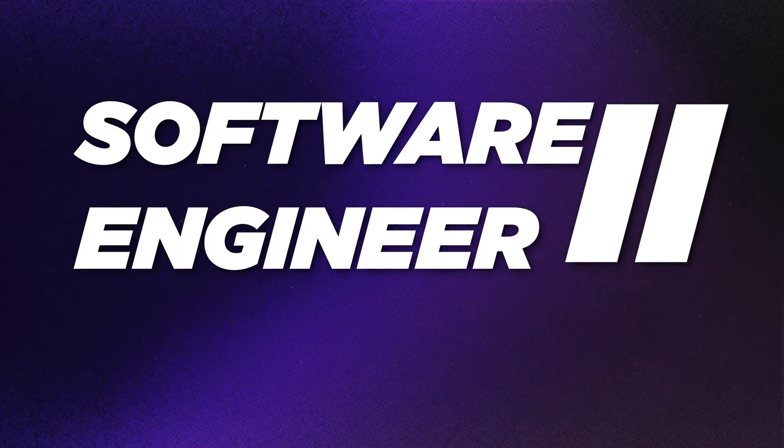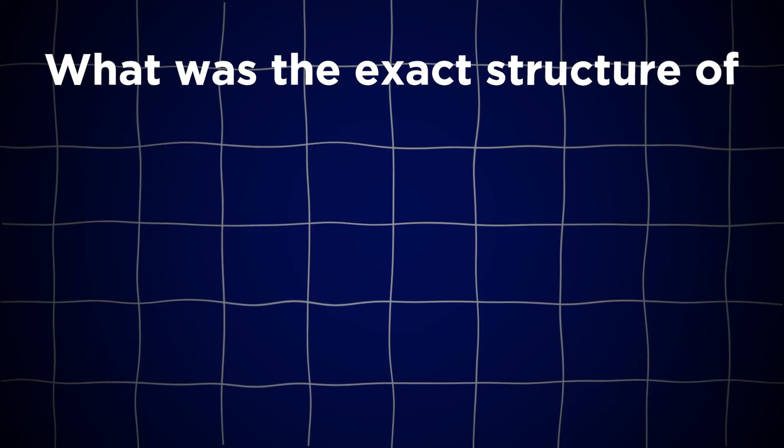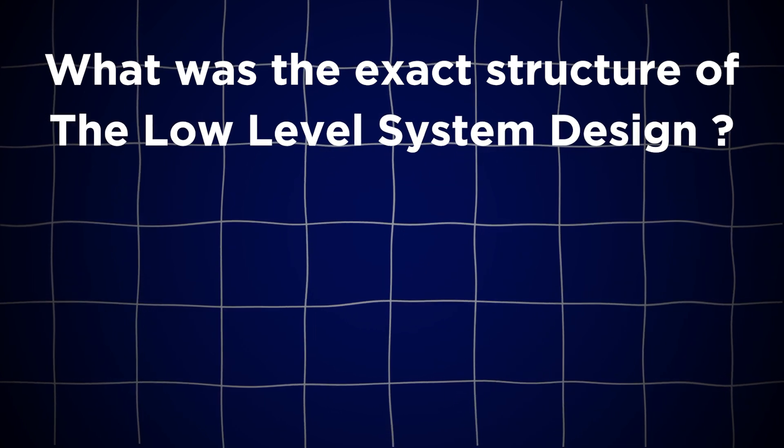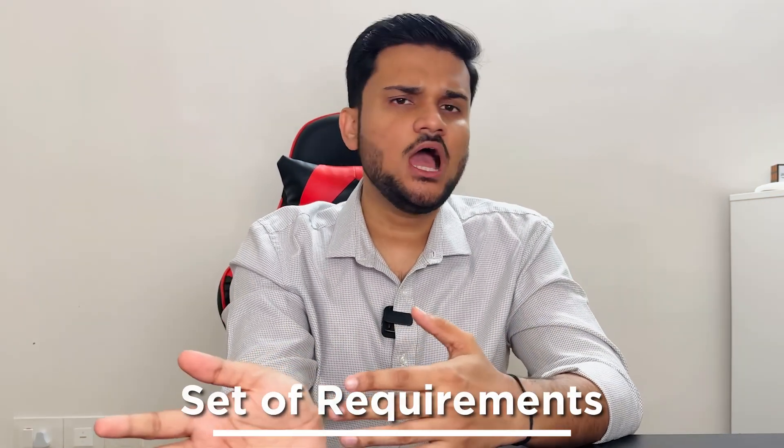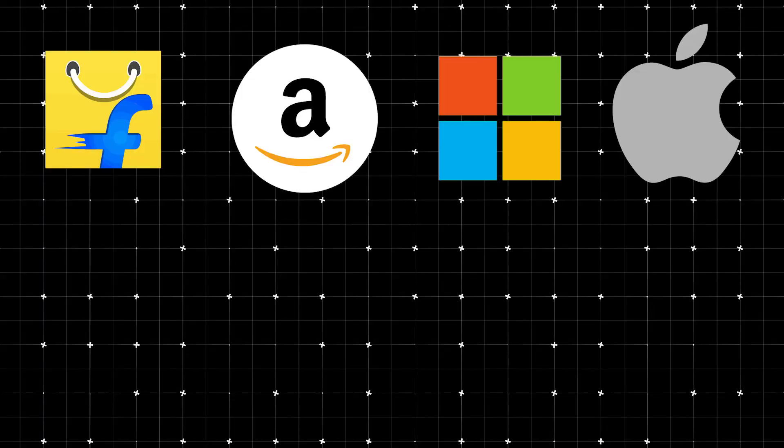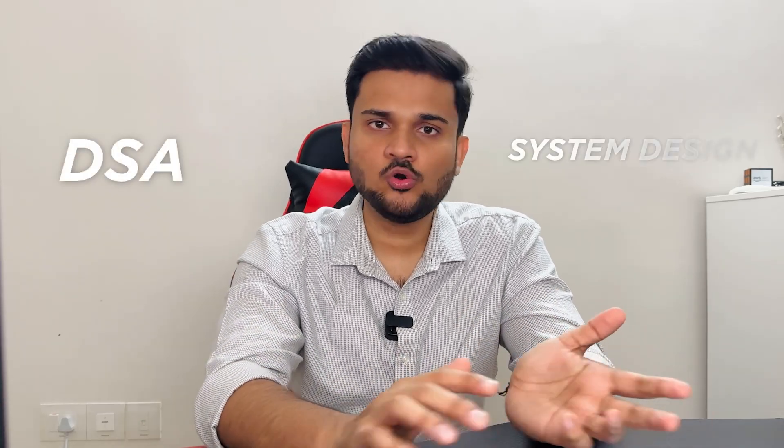Hello everyone, I'm Sankir Singh, welcome back to my channel. This video is going to be special. Last year, I appeared for Software Engineering 2 roles at Flipkart and was able to clear all of them. In this video, I'm going to talk in detail about the exact structure of the low-level system design machine coding round, the exact problem statement asked, the exact set of requirements, the overall format, my approach to building the solution, and how the discussion part went. Flipkart keeps a good balance in their interview scenarios — they don't have only DSA or only system design rounds.